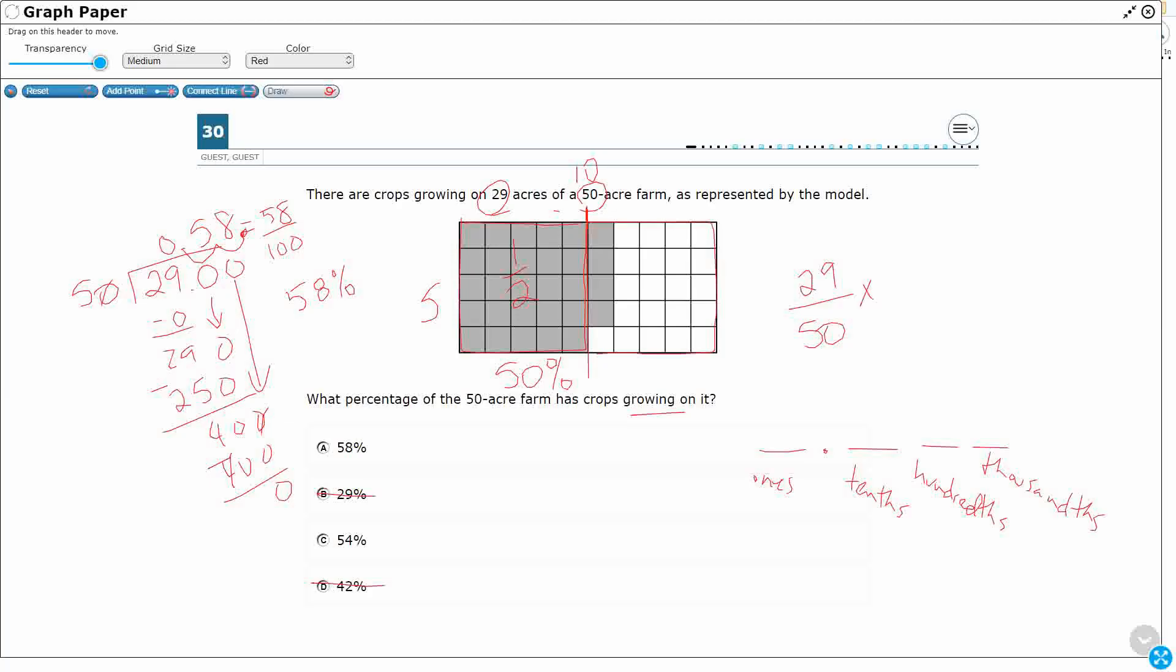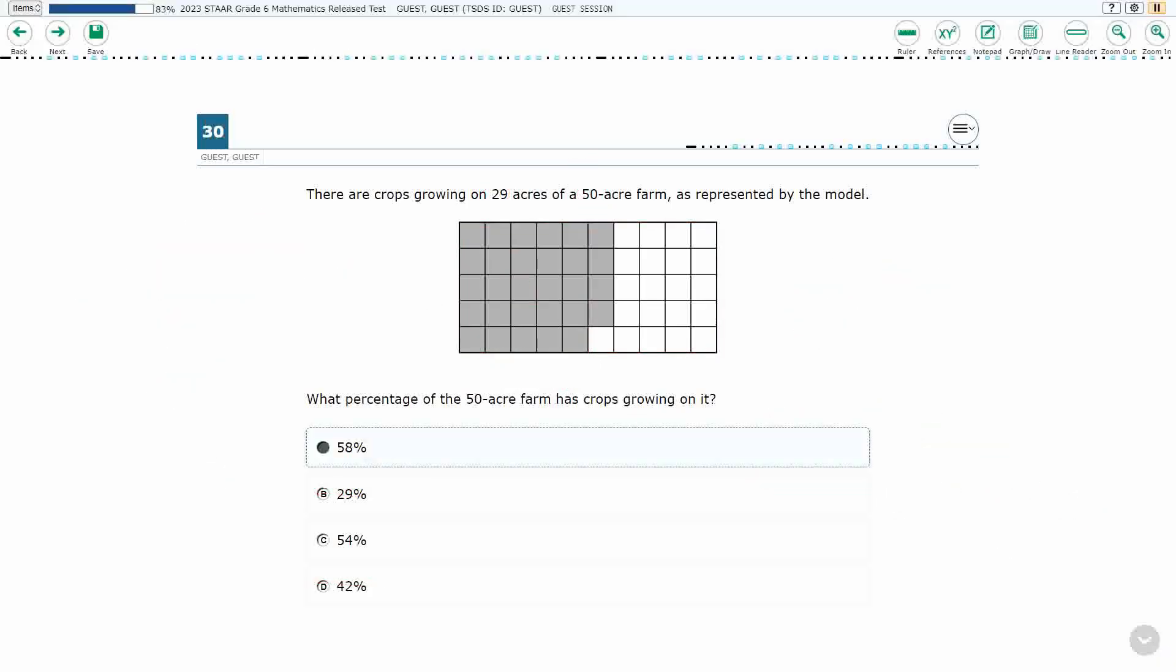So I'm going to make an equivalent fraction. I see that 50. All I got to do is double it. 50 doubled makes 100, which means that's what I want, one hundredths. So I just need to double the 29. That gets me to 58. And I can write it like this. And then, look, I'm back to where I started, 0.58. Still need to move the decimal over twice. So 58 percent is our answer.